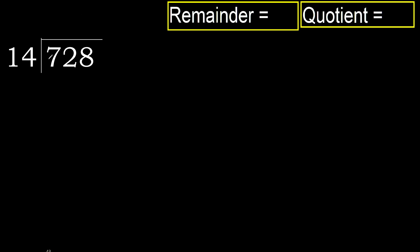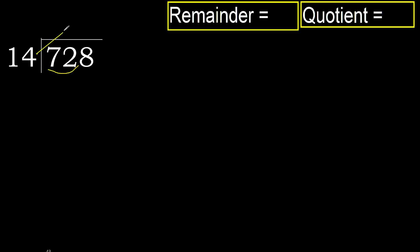728 divided by 14. 7 is less, therefore next. 72 is not less, therefore with 72. 14 multiplied by which number is nearest to 72?